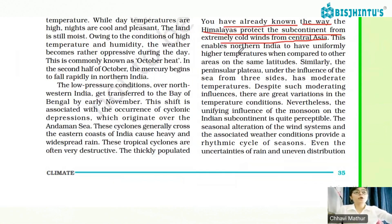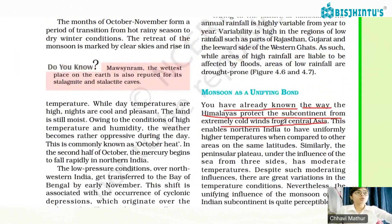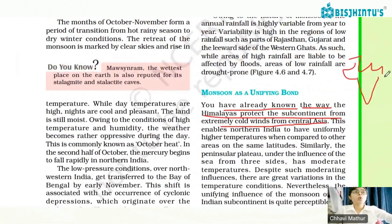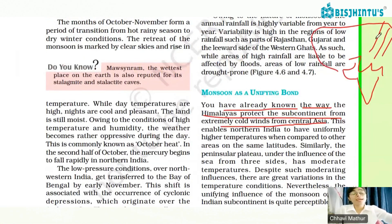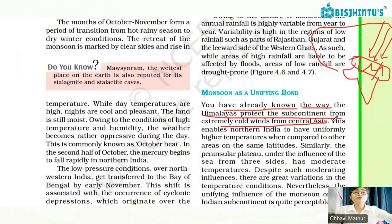You already know the way the Himalayas protect the subcontinent from extremely cold winds. Because of the Himalayas, this enables northern India to have uniformly higher temperatures when compared to other areas on the same latitude. The presence of the Himalayas is very important in our country.